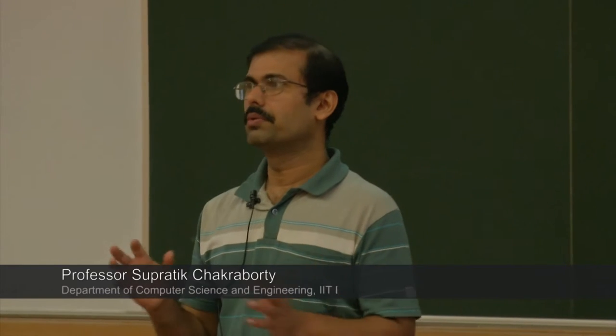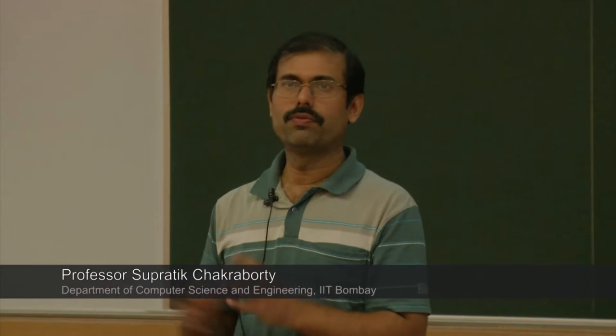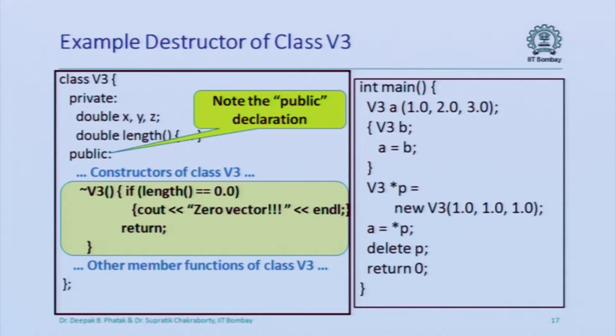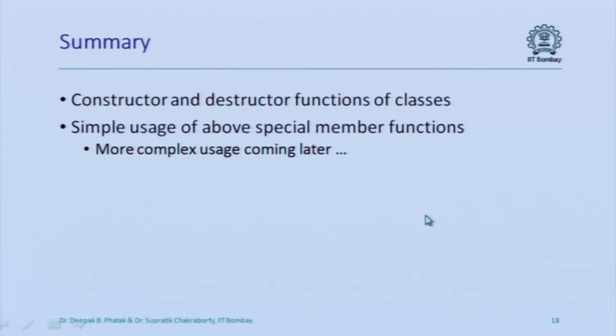All you need to remember is that creation of an object is immediately followed by invocation of the constructor — which constructor depends on what parameters you have sent. And deallocation of an object is immediately preceded by a call to the destructor. The destructor also has to be public because it will get called from the main function when objects are being allocated and deallocated. For your purposes, the only difference between a struct and a class is that everything in a struct is public by default and everything in a class is private by default. You do have constructor functions for structs.